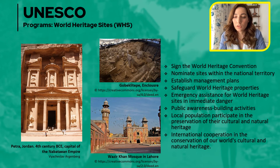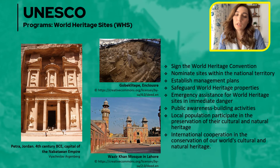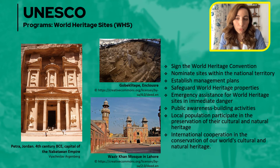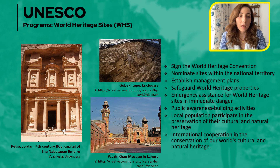The world heritage list contains both cultural sites — like Petra in Jordan — and natural sites — like the Canadian Rocky Mountains — or mixed cultural and natural sites like Mount Athos in Greece. There is also a danger list, which includes sites like the cultural landscapes and archaeological remains of the Bamiyan Valley in Afghanistan.